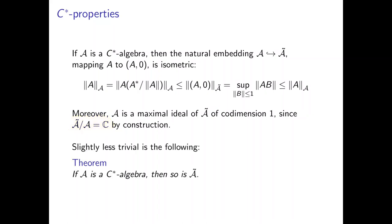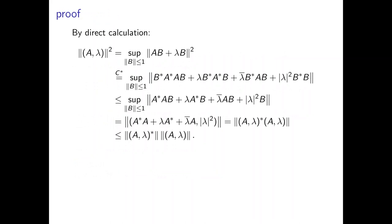Slightly less trivial is the following: if A is a C-star algebra, then so is its unitization. The proof is brute force calculation. We take the norm of (A, λ) squared, which by definition equals a certain supremum. The norm inside is the norm in A, which is a C-star norm by assumption. So we use the C-star property, which implies that this norm squared equals the norm of what's inside times its own conjugate. By the C-star property we get this identity in the second line.